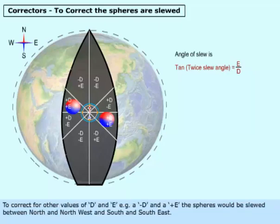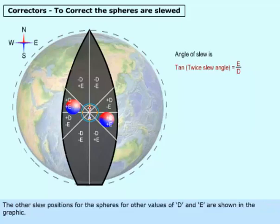To correct for other values of D and E, for example a negative D and a positive E, the spheres would be slewed between north and northwest and south and southeast. The other slew positions for the spheres for other values of D and E are shown in the graphic.